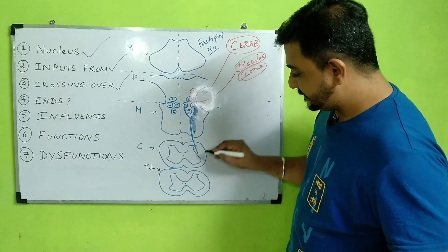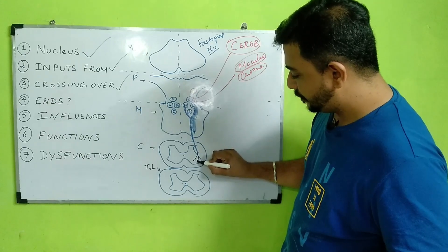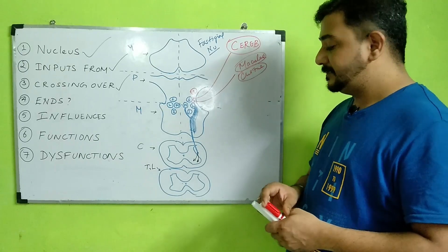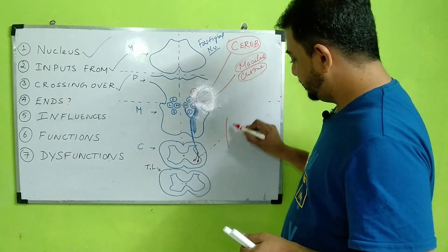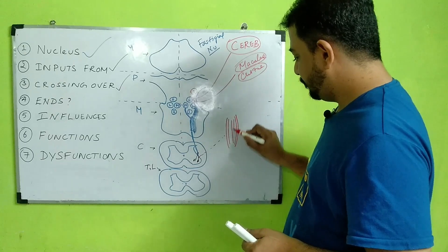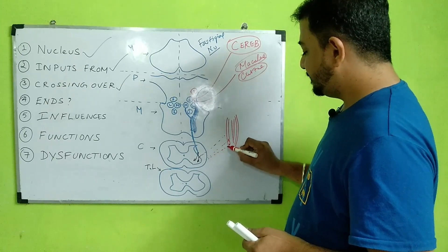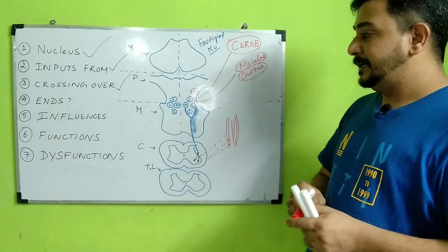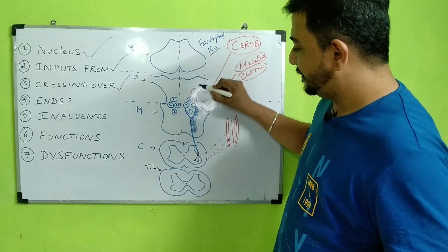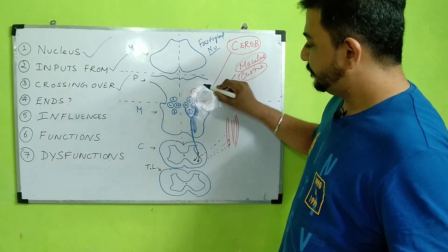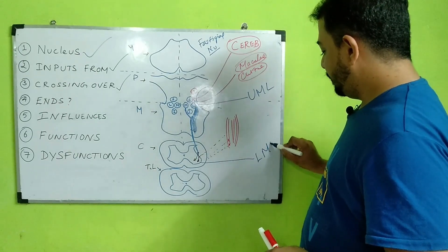The vestibulospinal tract travels down and ends in the anterior horn cells, where you have both alpha motor neurons and gamma motor neurons. The alpha motor neuron sends information to the extrafusal muscle fibers of the extensor muscles of the human body, and the gamma motor neuron sends information to the muscle spindles inside those extensor muscles. Regarding upper and lower motor neurons: the nucleus is where the upper motor neuron is located, and the anterior horn cells are where the lower motor neurons are located.